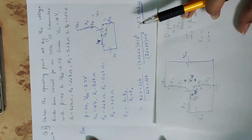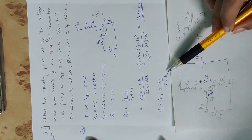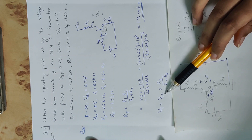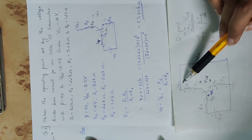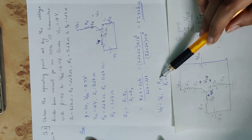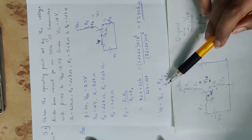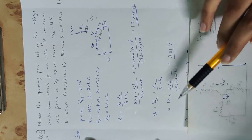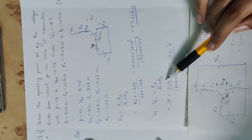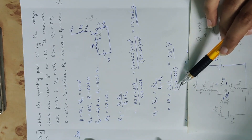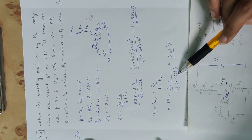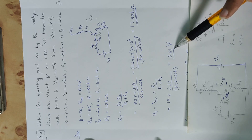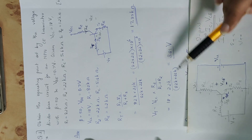Now we calculate Vth. Vth is equal to the total supply voltage VCC multiplied by R2 divided by R1 plus R2. Substituting: 18 into 22 kilo ohm divided by 82 kilo ohm plus 22 kilo ohm, which gives Vth equal to 3.81 volts.